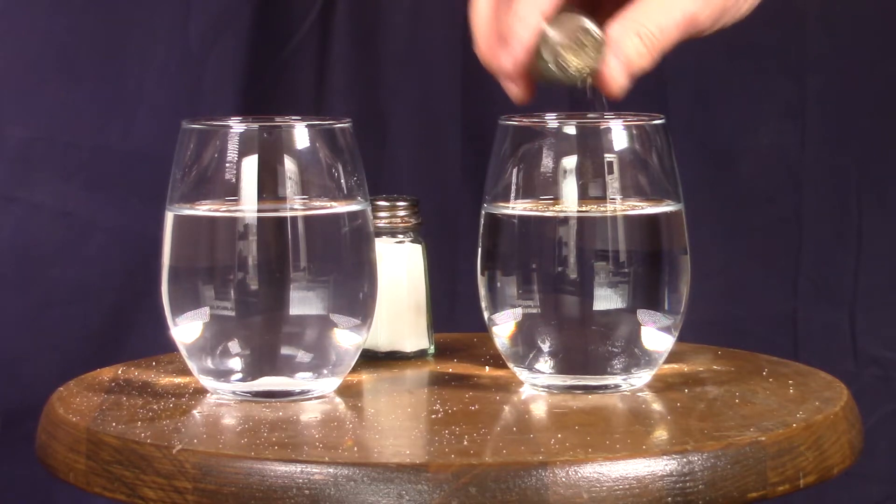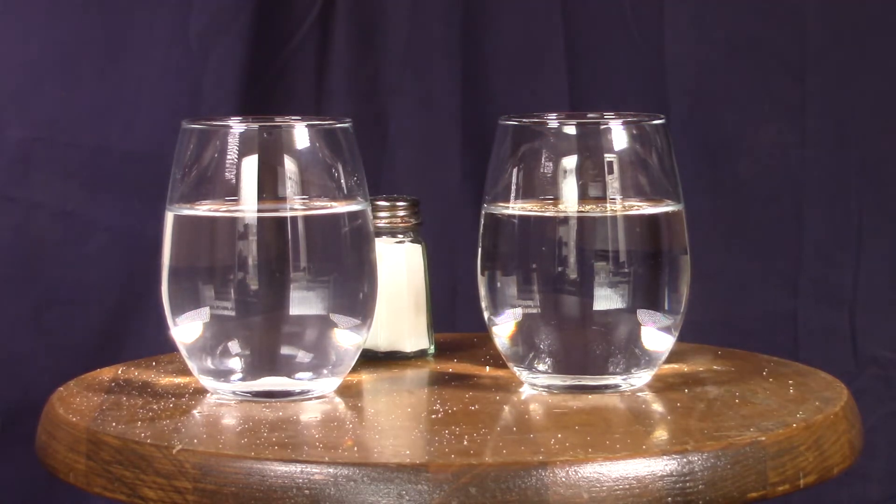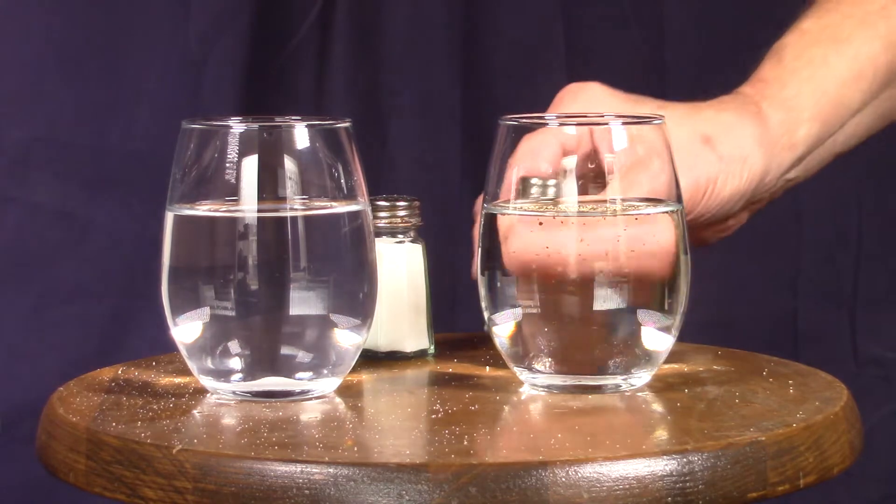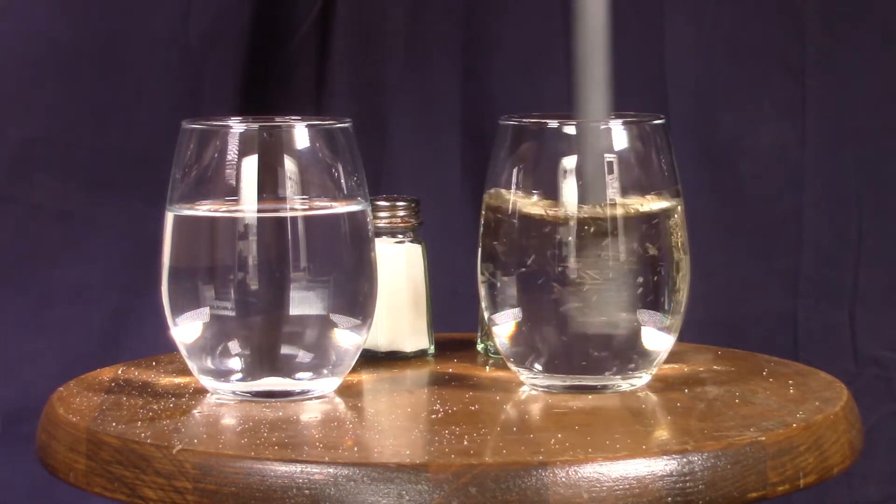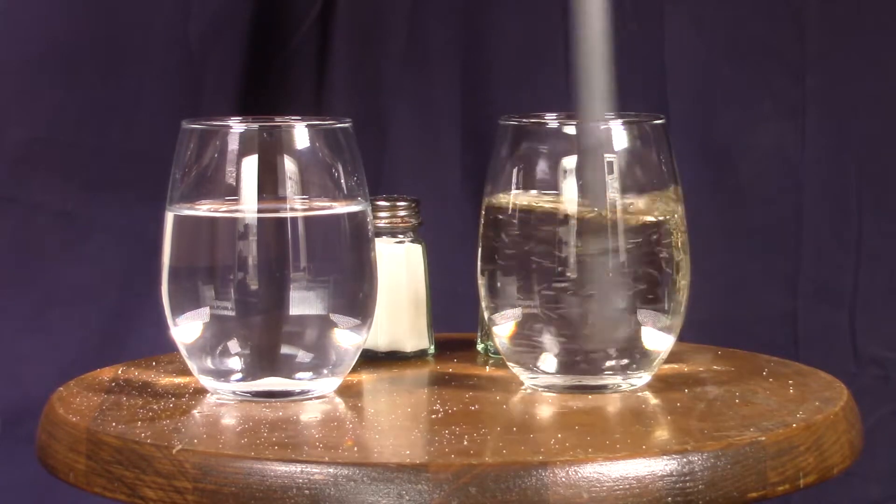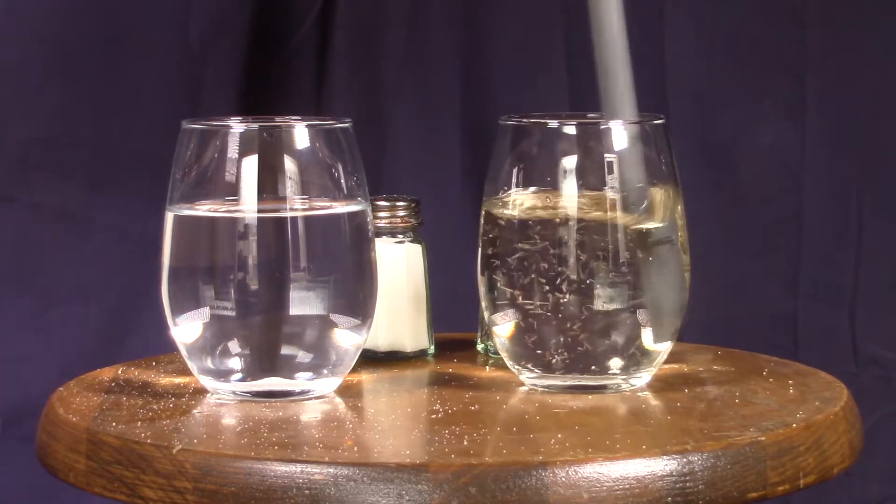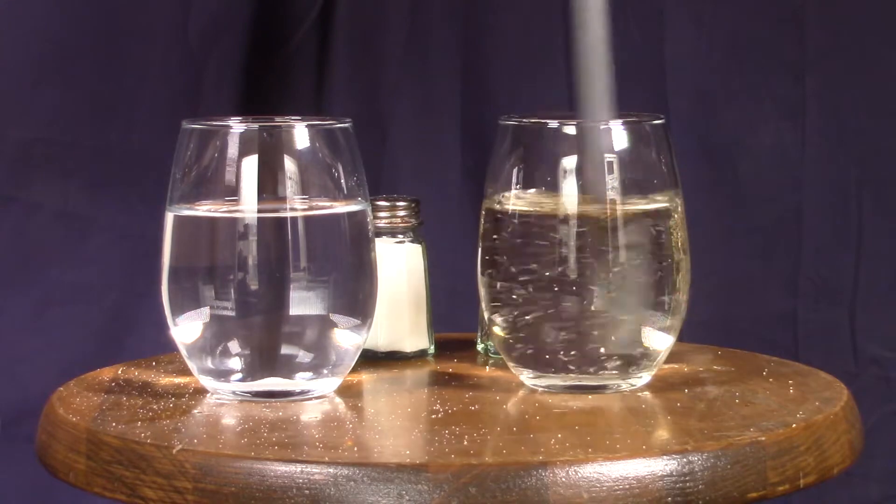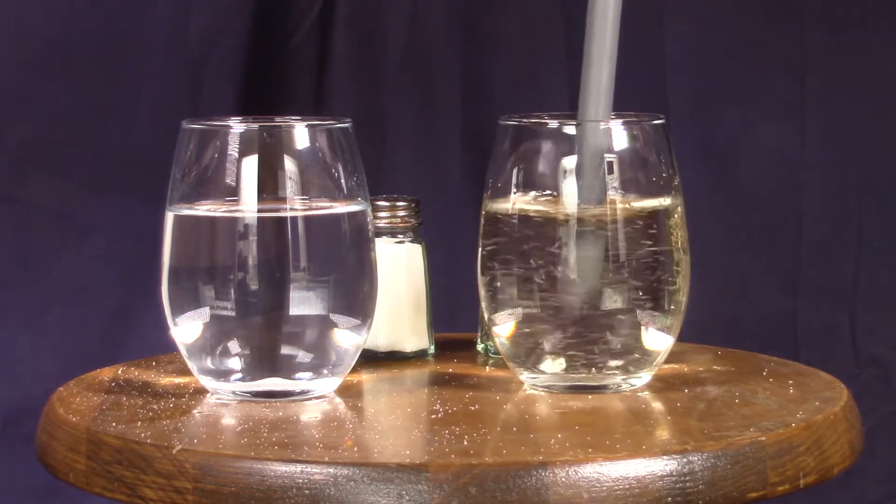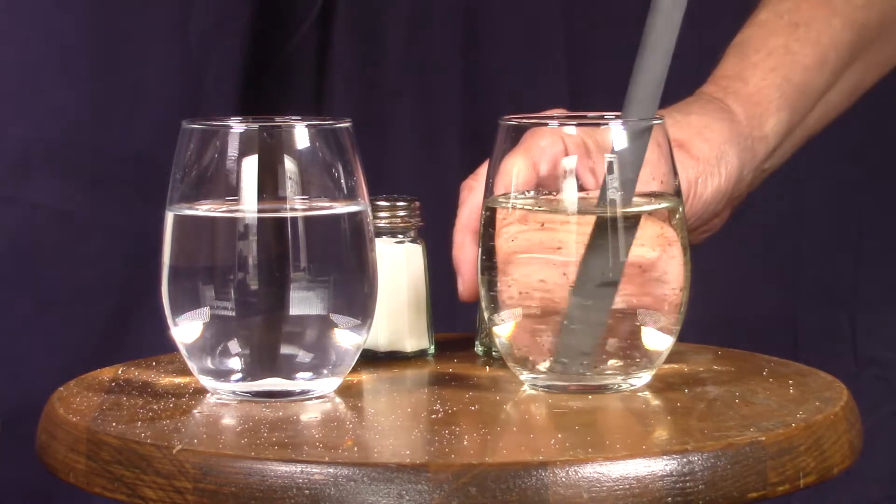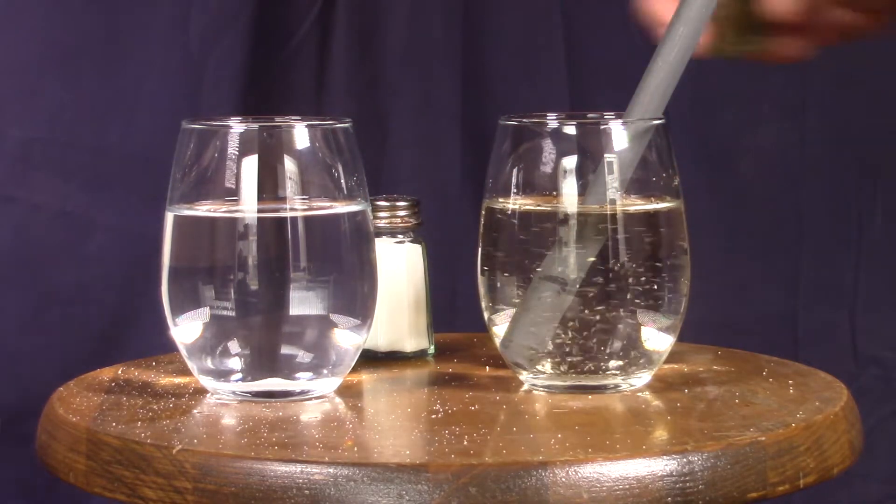In the right-hand glass, we're adding pepper. Pepper will demonstrate two constituencies: suspended solids and color-turbidity. Turbidity is simply the inability for light to pass through the water effectively, and there's a measurement that can be done to determine the amount of turbidity in the water.